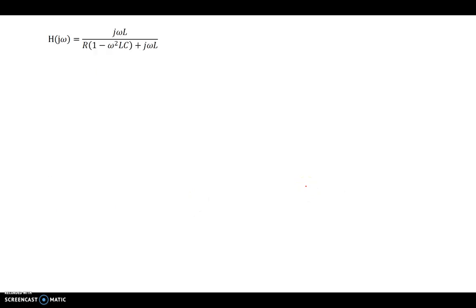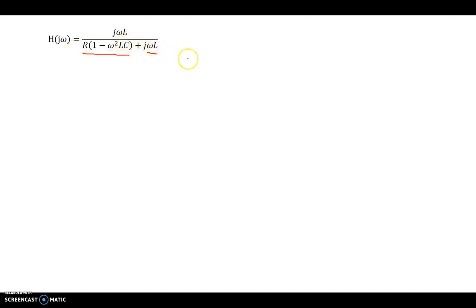Now we found the transfer function, and we were asked if this circuit behaves as a low-pass, high-pass, or bandpass filter. To determine that, we need to look at the magnitude response. The top part, jωL, is purely imaginary with no real part, so its magnitude is simply ωL. The bottom part has a real term and an imaginary term, so the magnitude of the bottom is the square root of (1 − ω²LC)² plus (ωL)².